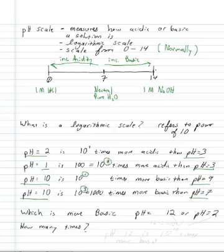So, think about this. Which one's more basic? 12 or 2? So, the more basic is the higher one. pH 12 is 10 to the 10, because our difference here is 10. 12 minus 2 is 10. 10 to the 10 times more basic.